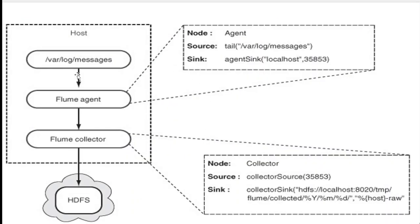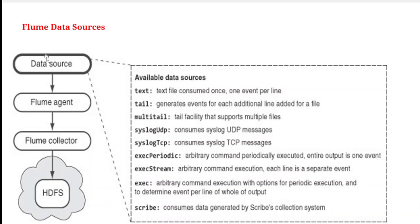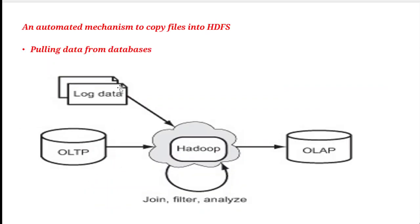Here is another example: host nodes with variable and log messages send data to Flume agents, then to Flume collectors, and then to HDFS. For Flume data sources, data goes from data sources to Flume agents, then to Flume collectors, and then to HDFS. There is also an automated mechanism to copy files into HDFS.